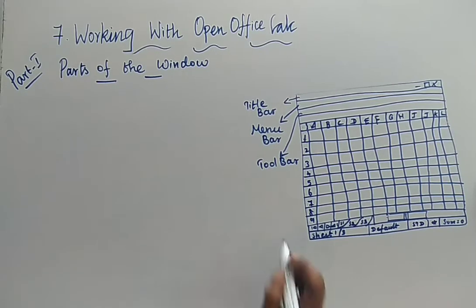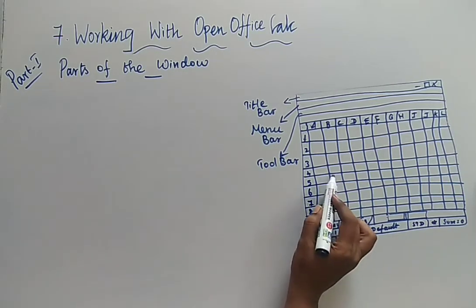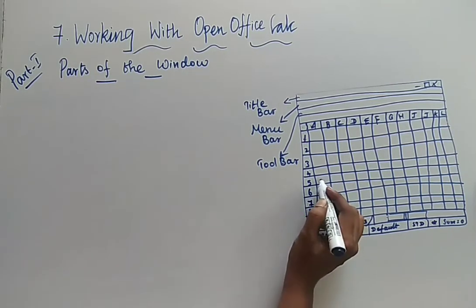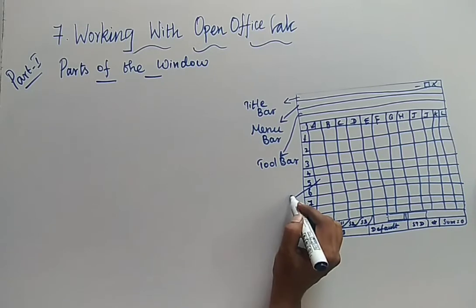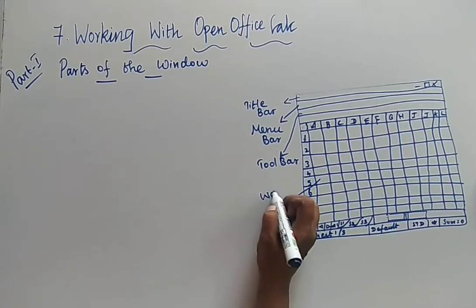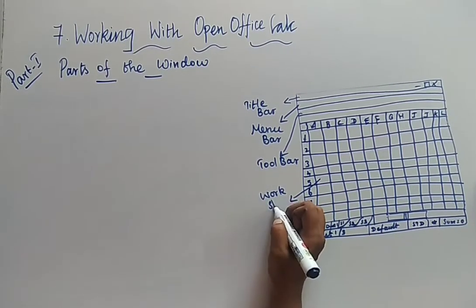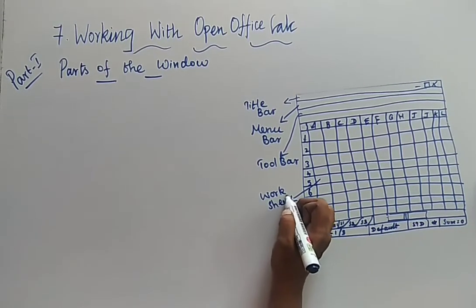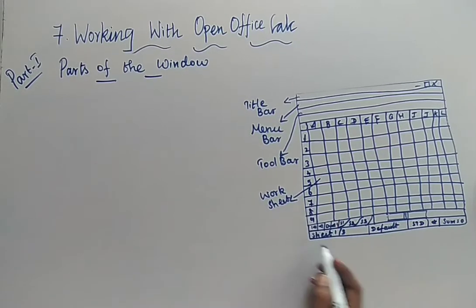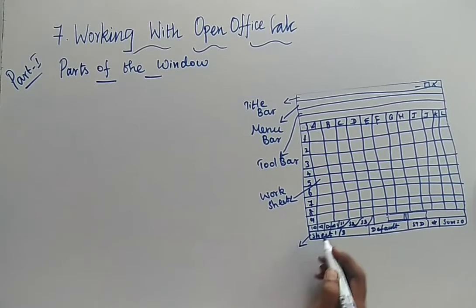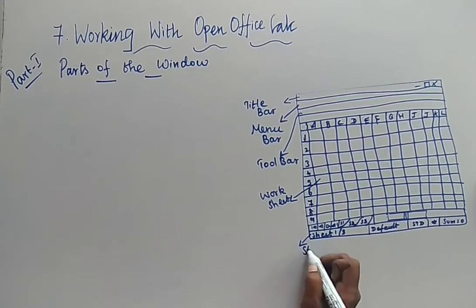Next here is your grid of cells — that is your worksheet. And here you are going to have the status bar.